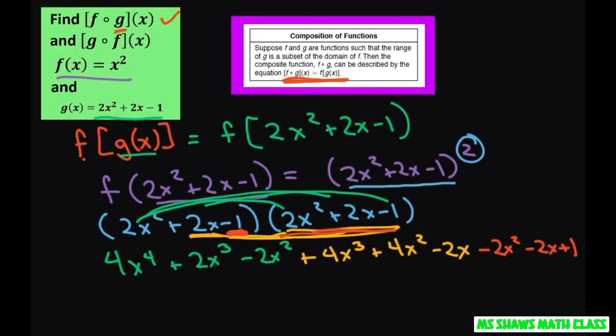We're going to collect like terms. We only have 4 of these x to the fourths. Looking at our cubes, that's going to be 6x cubed. So I'm wondering why. Let me just see. So this should have been a 4. So when we did that, I messed up. That's going to be plus 8x cubed.